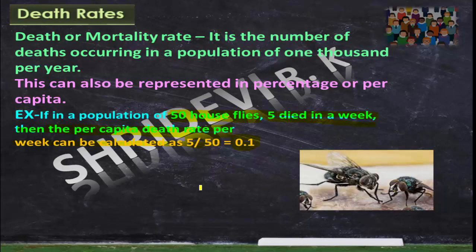The number of new births per thousand individuals of a population per year is called birth rate, also referred to as births per capita. The number of deaths in a population of a thousand per year is called death rate. Whatever the numbers or examples given, you have to follow the same procedure. The remaining population attributes — sex ratio, population density, and age pyramid — will be continued in the next video. Hope this is clear for you. Thank you.